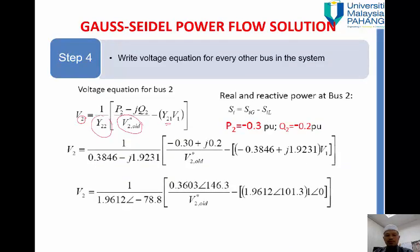Then times with the connection V1. So remember our P, P is negative since we want to put the P and Q is away from the bus. So Q also negative, but when you include to the equation negative negative become positive. That's why your Q is now positive.